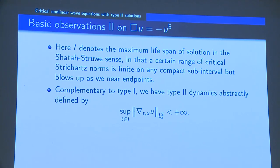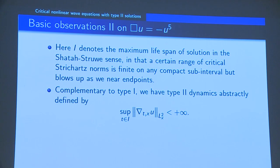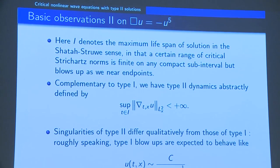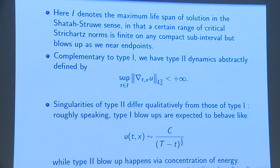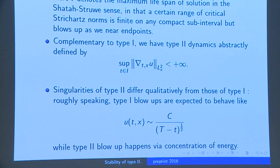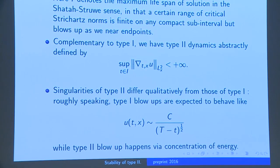On the other hand, we have type 2 dynamics given by the requirement that we have a priori a bound on the L^2 norm of the space-time gradient of the solution. As we heard, type 2 dynamics and type 1 dynamics are quite different.